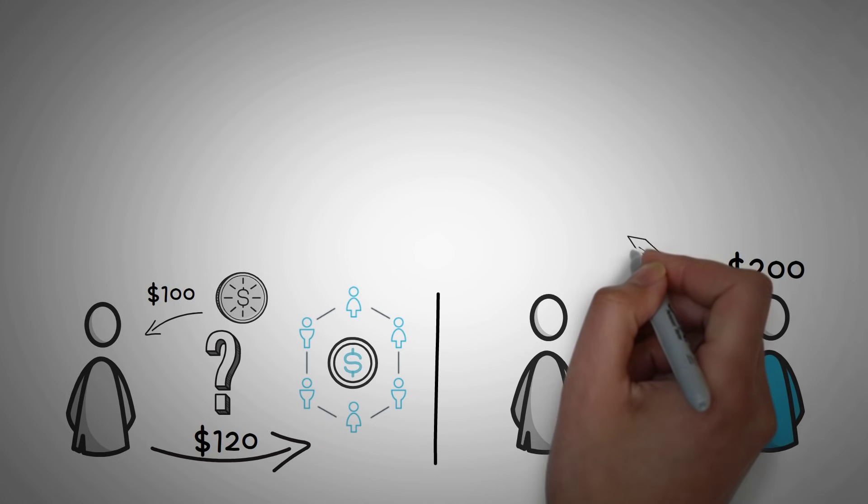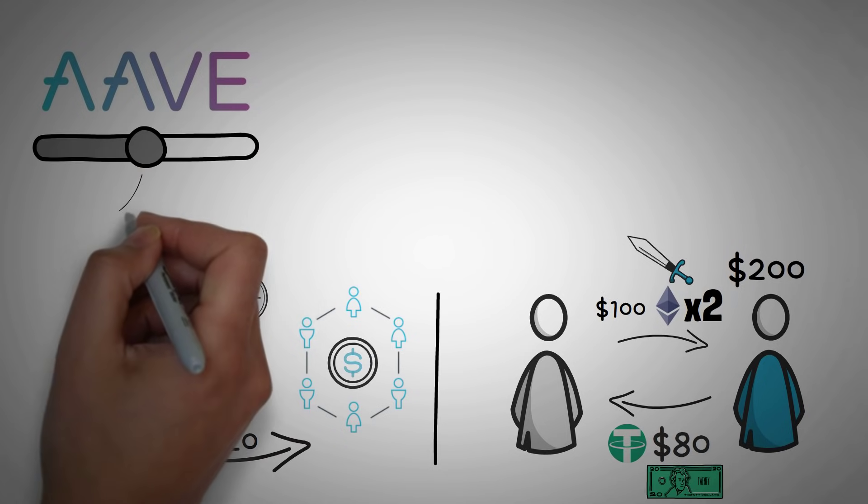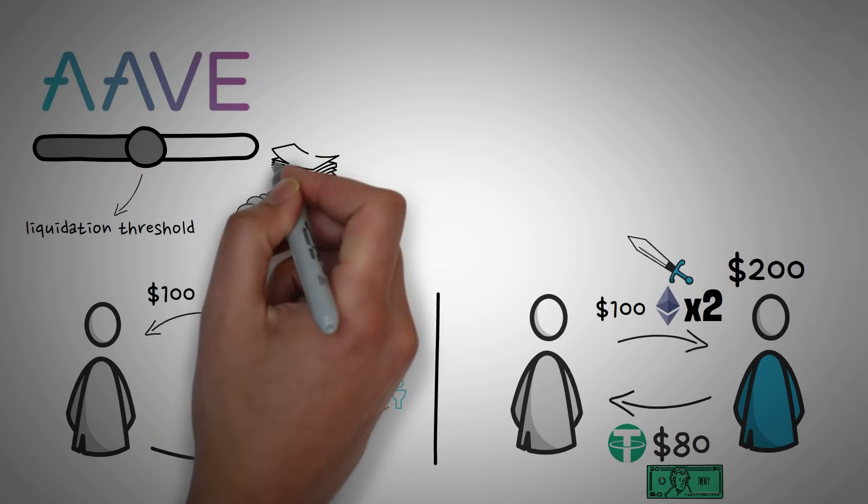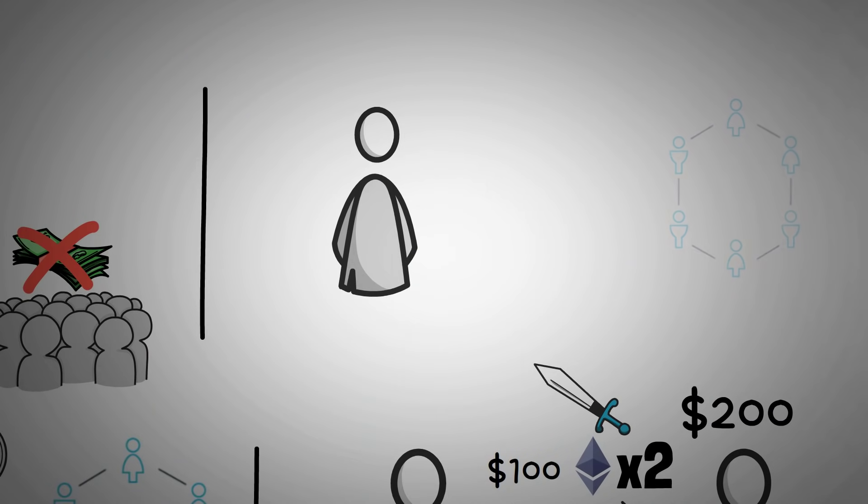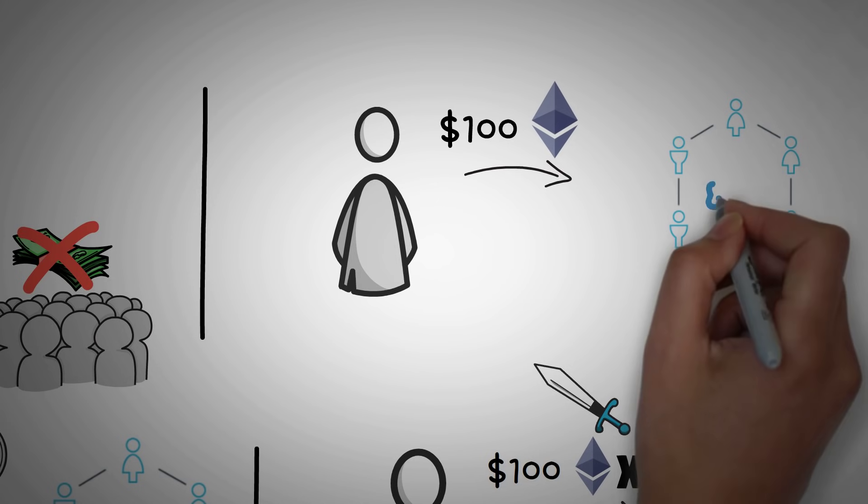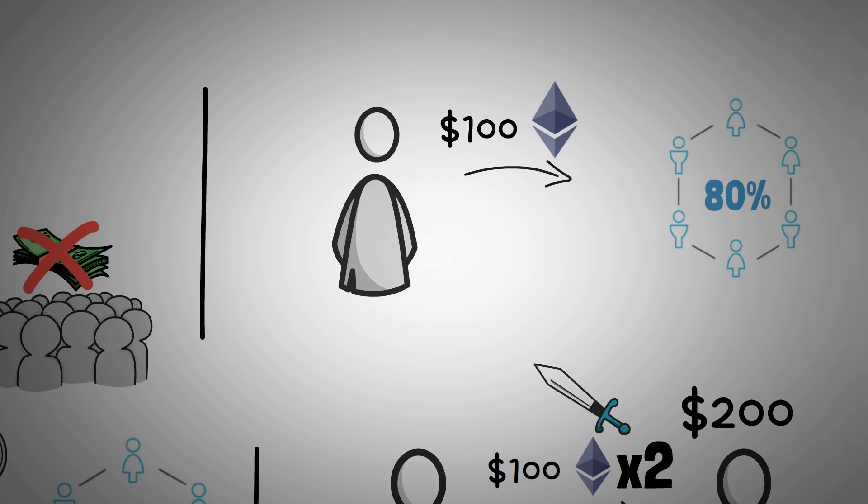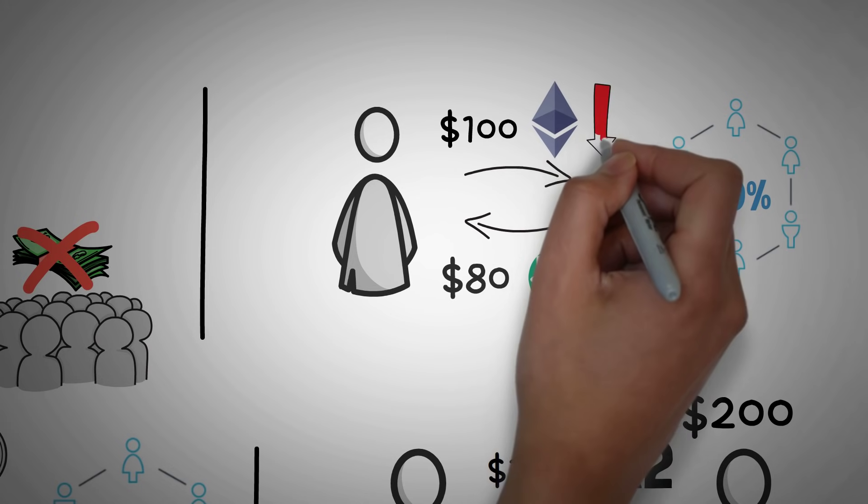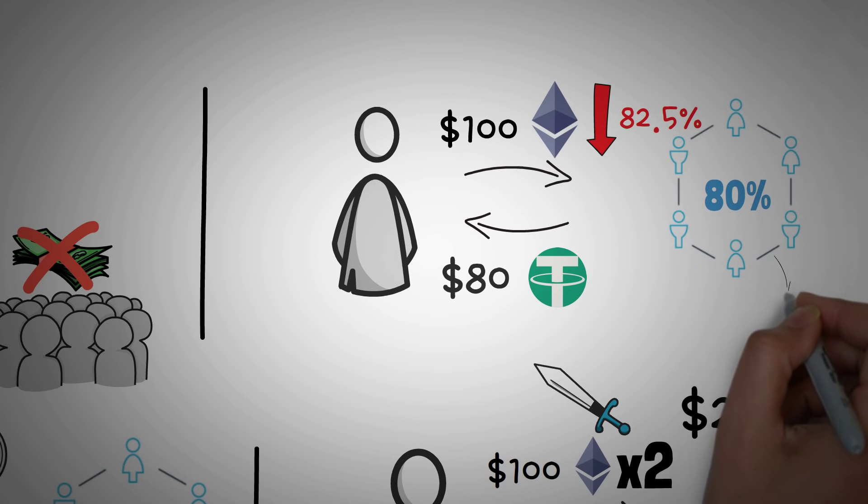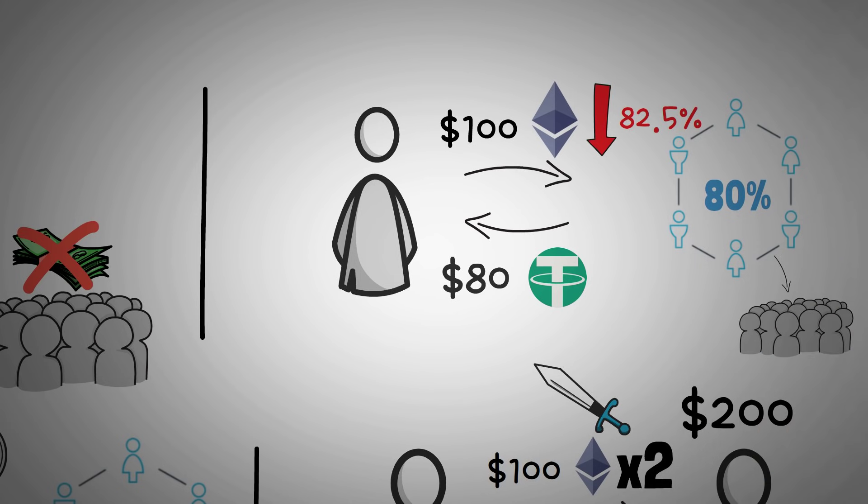This is a double-edged sword though, because Aave has something called a liquidation threshold where they will automatically sell your collateral to cover the loan that you have created. This way, investors never lose money. Let me use an example. So you put up a hundred dollars of Ethereum, and what is called the maximum loan-to-value of Ethereum is 80%, which means you can borrow 80% of that hundred dollars. So you decide to borrow eighty dollars of Tether. Well, if that Ethereum price drops to more than 82.5% of its value, which is the liquidation percentage, Aave will automatically take your Ethereum and pay back the lender. However, you get to keep that eighty dollars that you borrowed.